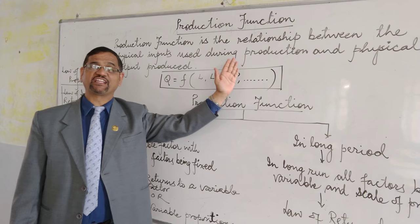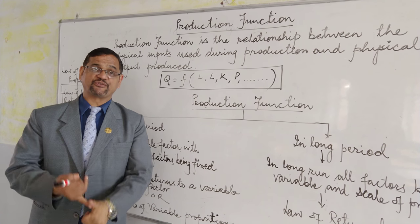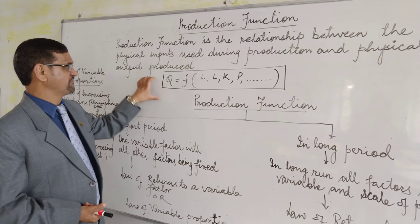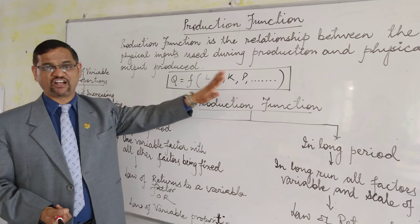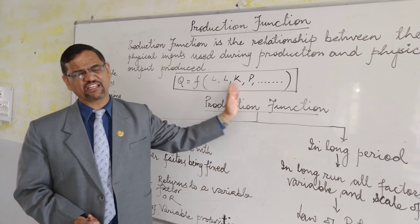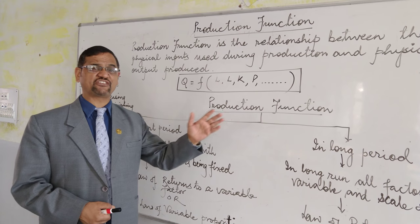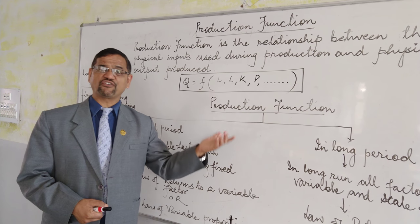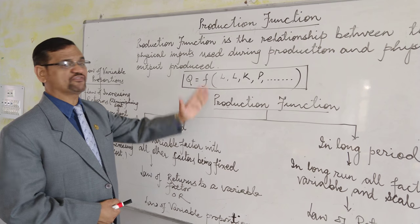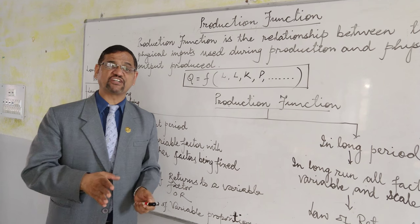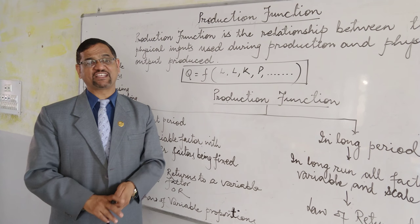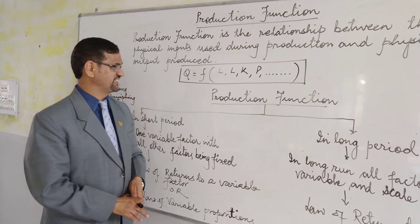So the production function tells us the relationship between the amount of inputs used and the amount of output produced. We can take a function of land, labor, capital, and profit, along with other factors such as transportation and raw materials — all the elements influencing the production of a commodity.